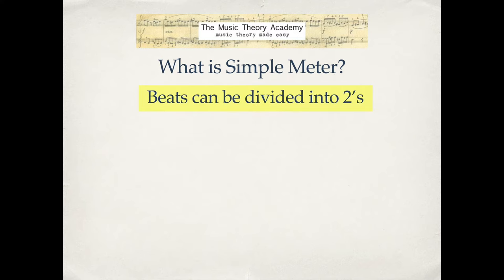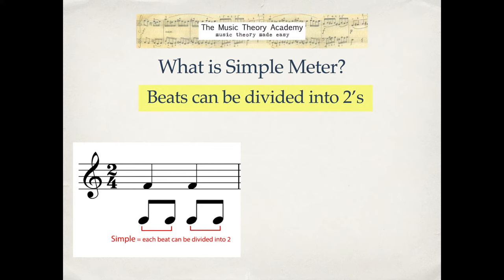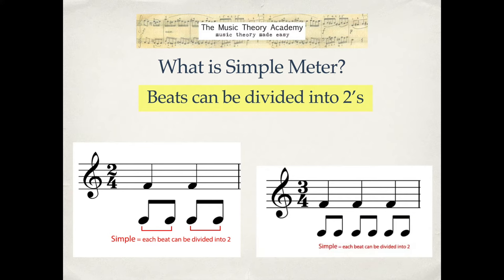What is simple meter? Simple meter is an expression that describes a timing where the beats can be divided into twos. Here we've got a time signature of two-four — two crotchet beats or two quarter note beats — and each of those quarter notes can be divided into two eighth notes or two quavers. So we describe this as being simple because each beat can be divided into two.